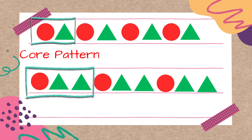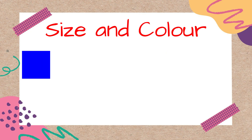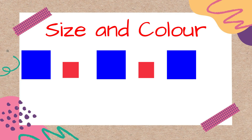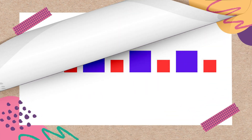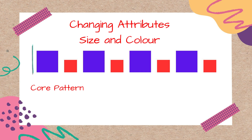Let's take different examples with another two changing attributes — that is size and color: big square, small square, big square, small square, big square, small square. Can you identify which sequence is repeating? The core pattern is: big square, small square — this is repeating, so this is the core pattern.